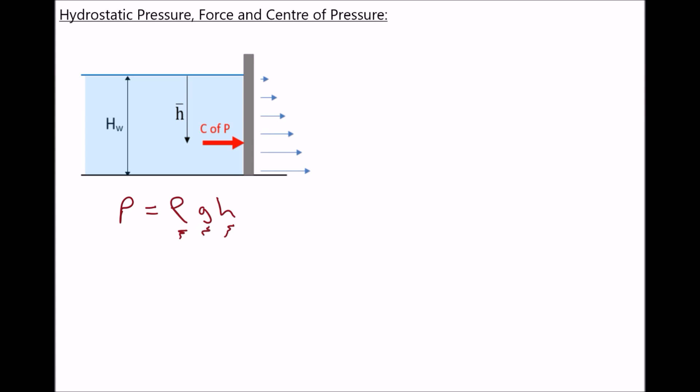If there was no gravity, there would be no hydrostatic pressure. We see the same thing on the Earth's surface because it's the gravitational pull that attracts our atmosphere to the outside of our planet. So hydrostatic pressure is a product of the gravitational pull.